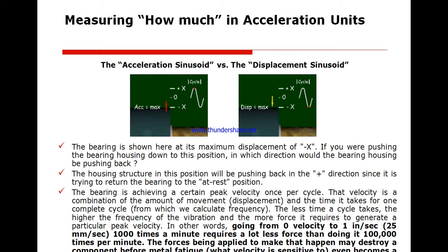One important fact: if velocity goes from zero to a certain amount one thousand times a minute, it requires far less force than doing the same one hundred thousand times a minute. So changing velocity from zero to 25 mm/s at one thousand times per minute is very different from doing it at one hundred thousand times per minute.